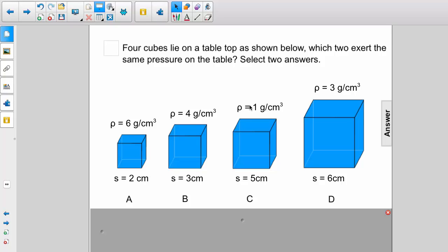Four cubes lie on a tabletop as shown below. Which two exert the same pressure on the table? Select two answers.